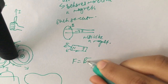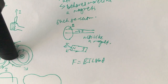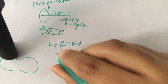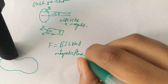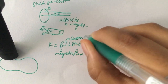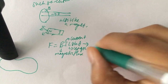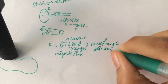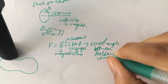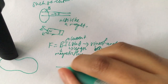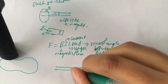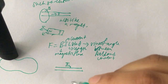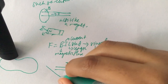In that equation, B is the magnetic flux density of the field, I is the current of the conductor, L is the length, and sin θ is the angle between the field and the current. The force works best at 90-degree angles — sin θ is maximum at 90 degrees. If it's not 90 degrees, you won't get the full effect of the force, which is why you need the sin θ term.